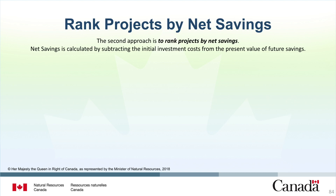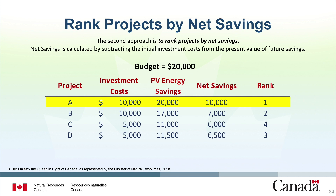The second approach is to rank the projects by net savings. Net savings is calculated by subtracting the initial investment costs from the present value of future savings. Project A has an investment cost of $10,000 and $20,000 of present value energy savings — net savings of $10,000. Project B has an investment cost of $10,000 and $17,000 of present value energy savings — net savings of $7,000. When you rank these projects from greatest to smallest net savings, Project A comes in at $10,000, followed by Project B, D, and then C. Note that this ranking differs from the energy savings approach.